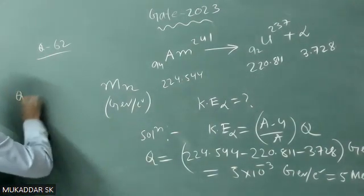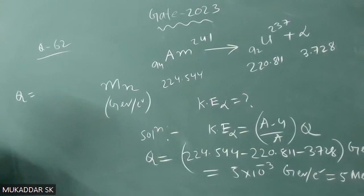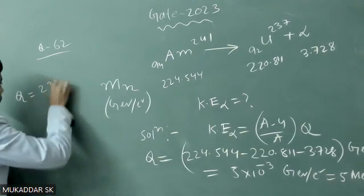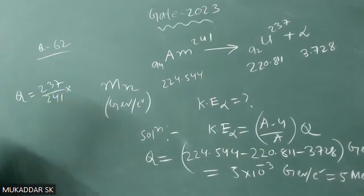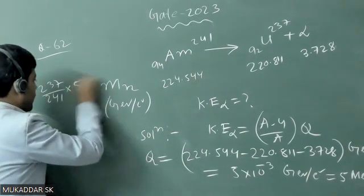Now if you calculate that Q value, A minus 4 is 237 divided by A that is 241 into 5, that is Q.